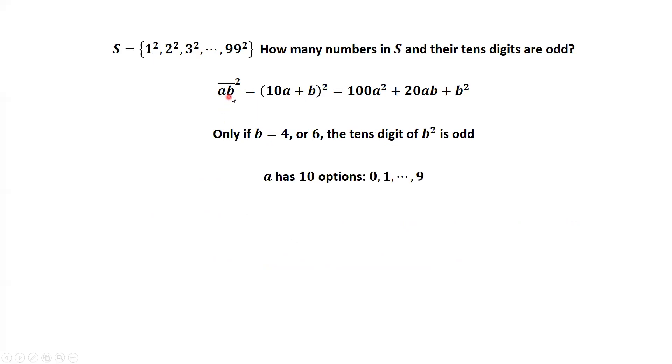For n equals AB, A has ten options from zero, one, until nine. For B, we only have two options, four and six, such that AB squared, its tenth digit is odd. We can calculate the total numbers equals ten times two, which is twenty.